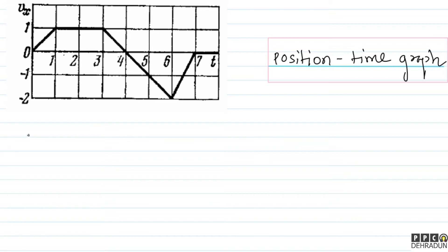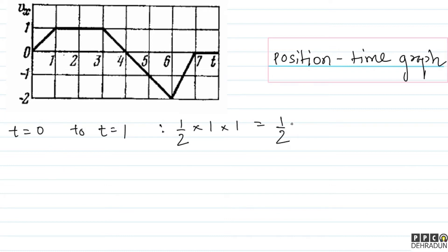Toh agar main bachyo t = 0 se t = 1 tak ki baat karun, toh yahan par velocity kya ho rahi hai — lagaataar badhti ja rahi hai. Is particular case mein area under the graph = half × base × height = half × 1 × 1 = half meter. Toh t = 0 par position 0 thi, aur t = 1 par x ki value half ho gayi.